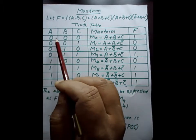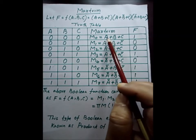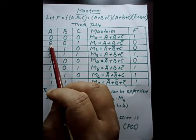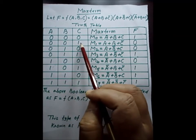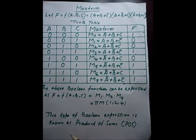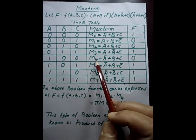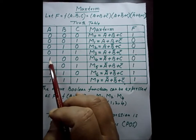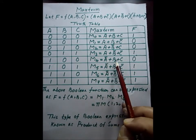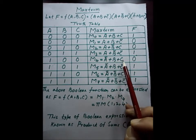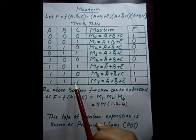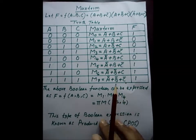In the first row, all variables are assigned to 0, so there is no complement — it is a summation of all variables without complement. In the second row, a is assigned to 0, b is assigned to 0, and c is assigned to 1, so there is a complement of c. Therefore it is a plus b plus complement of c. For M4: a is assigned to 1, b is assigned to 0, and c is assigned to 0. Therefore there is a complement of a only, giving complement of a plus b plus c. In the last row, all three are assigned to 1, so all three are complemented and then added.